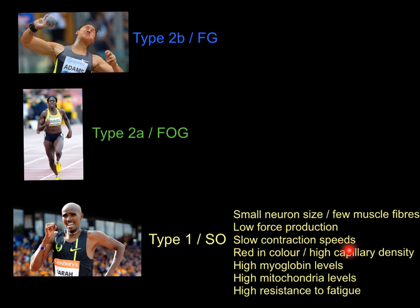Type 1 fibers have slow contraction speeds, hence why they're called slow oxidative. These muscle fibers are red in color, indicating the presence of a high number of capillaries, so they have a very good blood supply and therefore a very good oxygen supply — hence why they are slow oxidative, making high use of oxygen. They also have high levels of myoglobin, which carries and stores oxygen in the muscles, making them endurance-based fibers, along with high numbers of mitochondria.